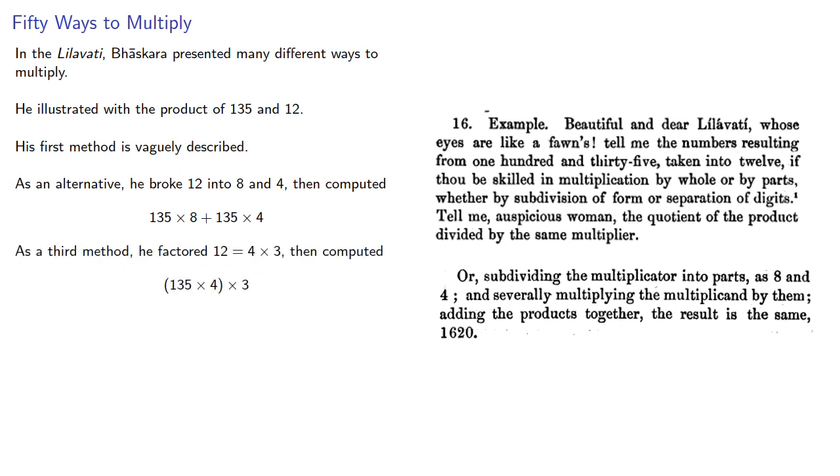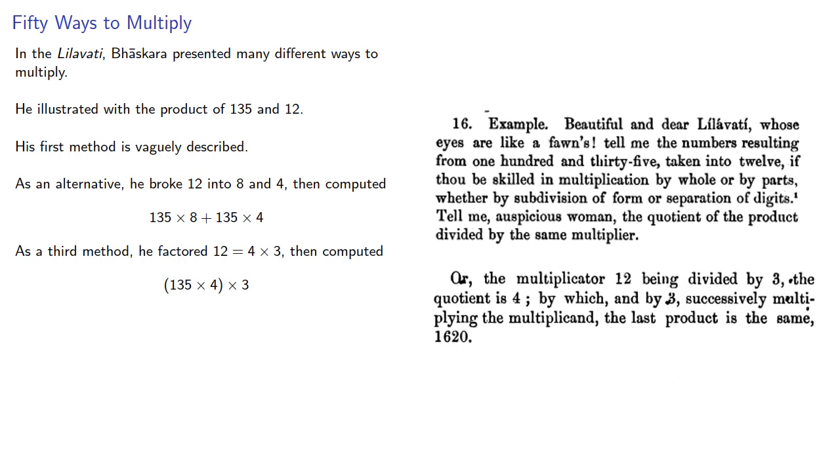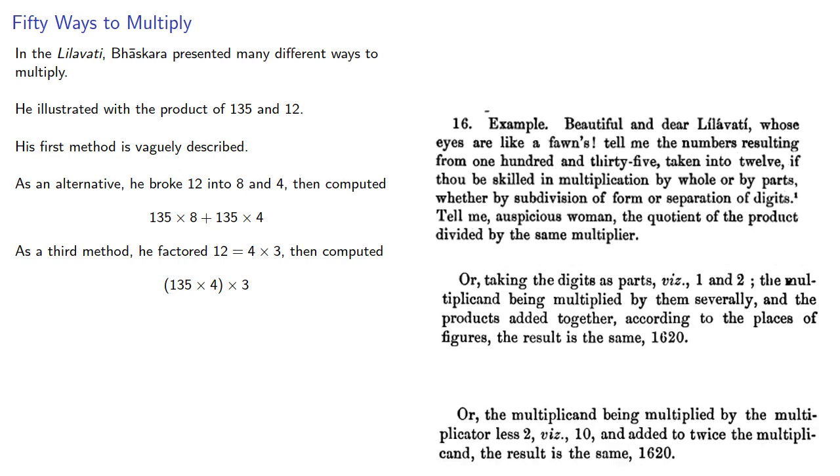As a third method, he factored 12 as 4 times 3, then he computed 135 times 4 times 3. And he also presented other possibilities.